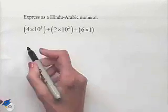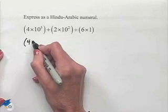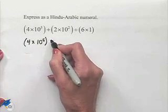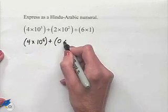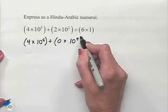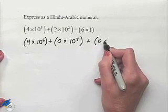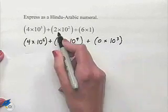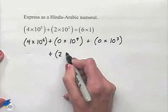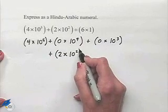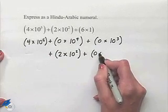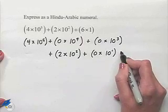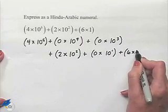We start off with 10 to the 5th, but we have 0 times 10 to the 4th, we have 0 times 10 cubed, we pick up with 2 times 10 squared, we have 0 times 10 to the 1st, and finally end with 6 times 1.